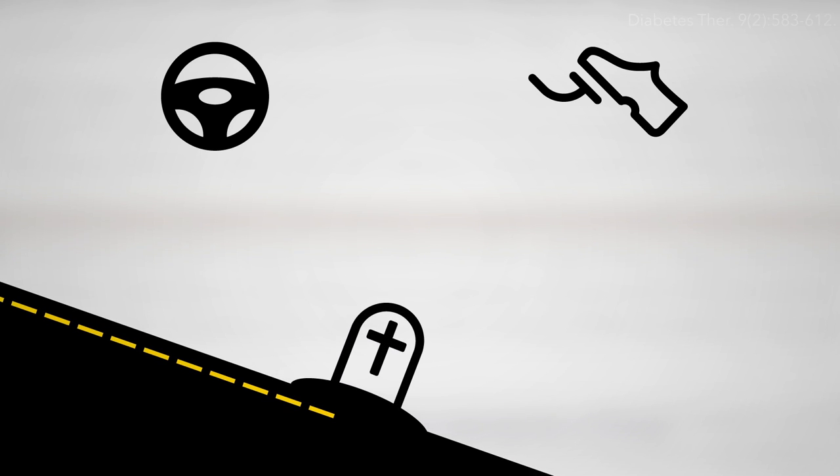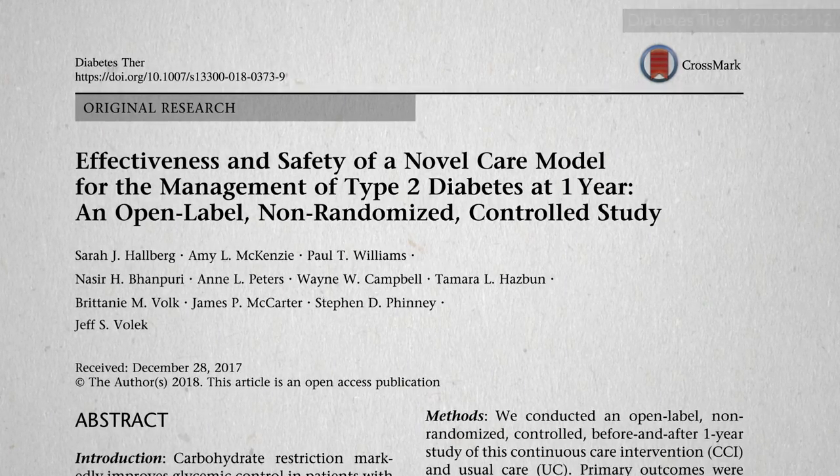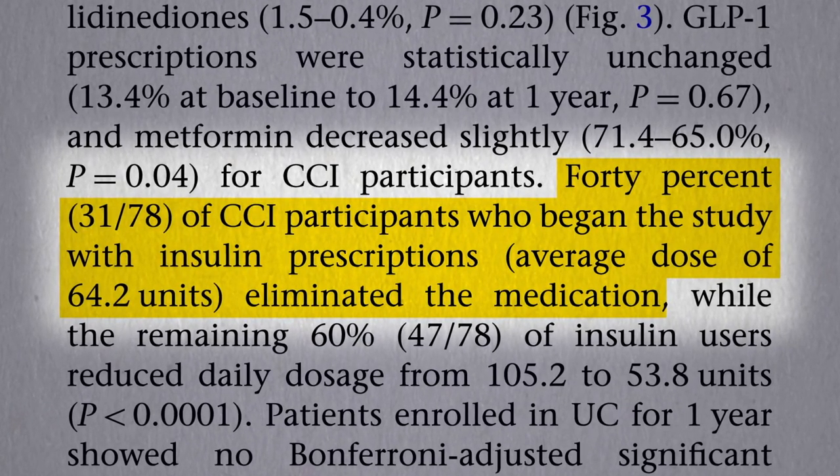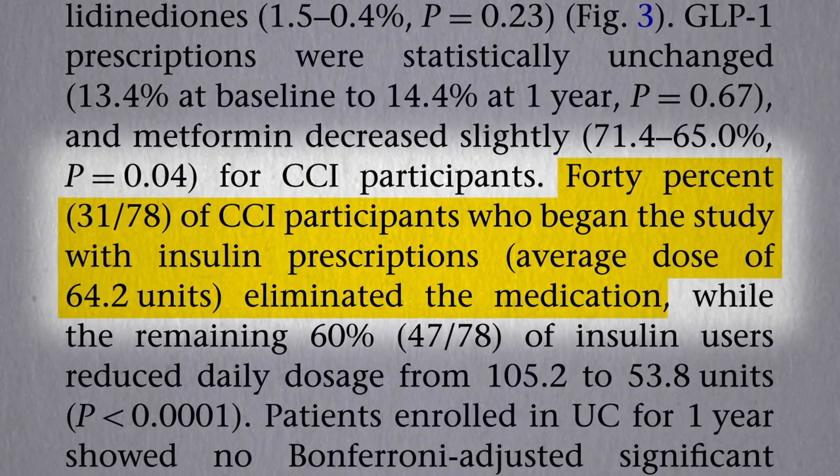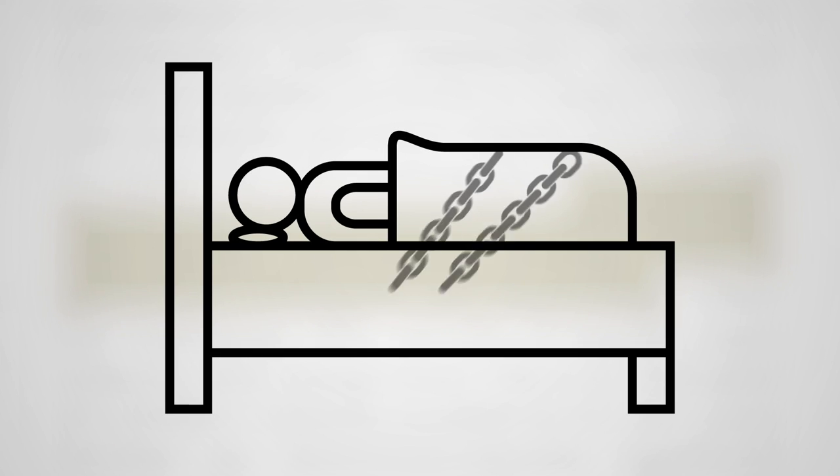The reason keto proponents claim they can quote-unquote reverse diabetes is that they can successfully wean type 2 diabetics off their insulin. But that's like faith-healing someone out of the need for a wheelchair by making them lie in bed the rest of their lives.